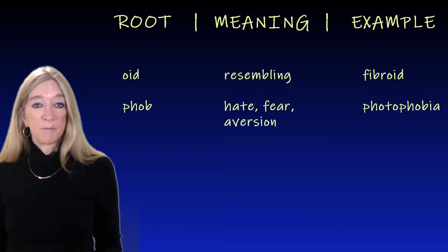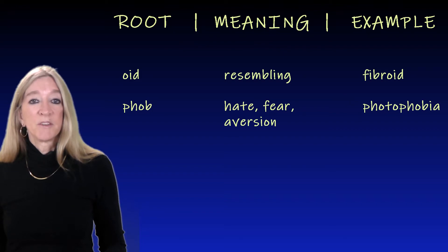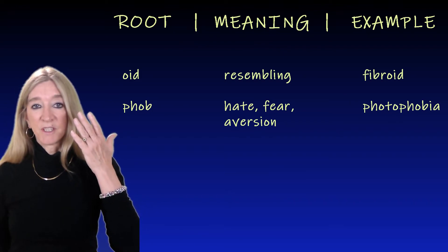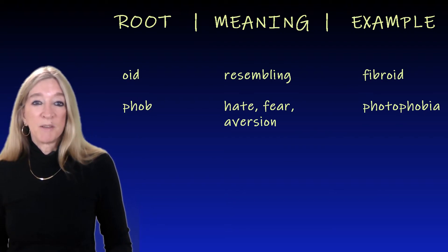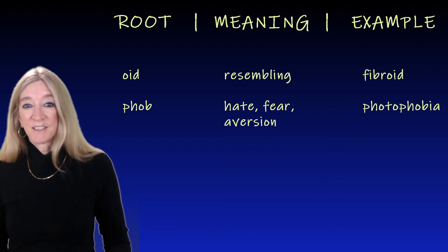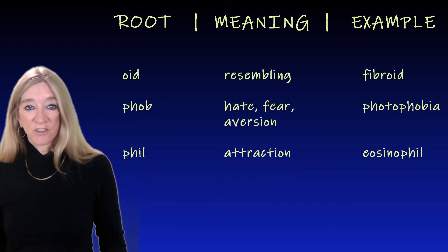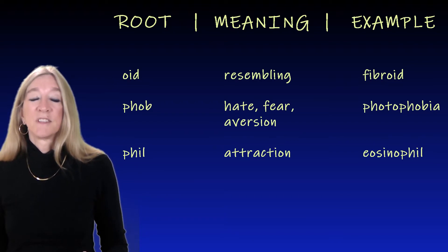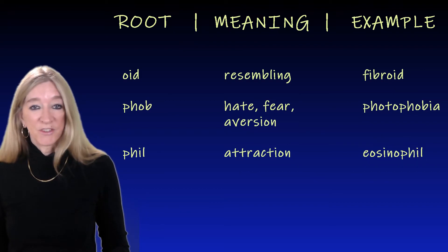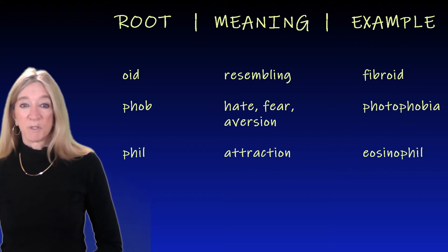The next root, 'phob,' meaning hate, fear, or aversion. An example is photophobia, which is extreme sensitivity to light, something like iritis. There are lots of popular words with phobia — maybe one of the better known ones is arachnophobia, fear of spiders. The next root is the opposite, 'phil,' meaning attraction. An example is eosinophil — leukocytes that histologically stain with a substance called eosin. This is the same 'phil' as in philosophy, love of wisdom, and philanthropy, love of humankind.